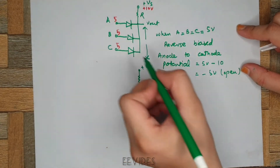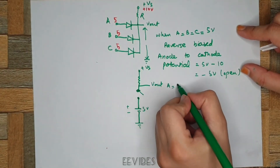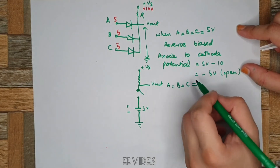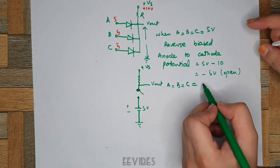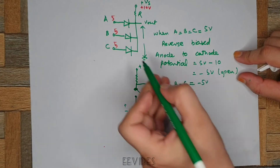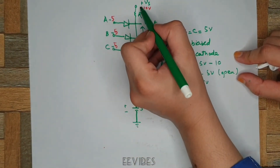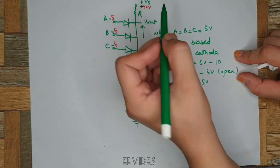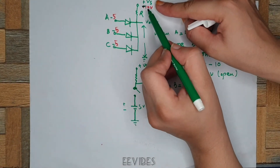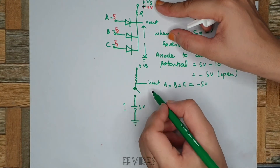Now let's consider another case where A = B = C = minus 5 volts. We are applying negative voltages at all input terminals. Here we assume the source voltage is equal to minus 10 volts. We will always assume the source voltage is negative when tying the cathode terminals as a common point.